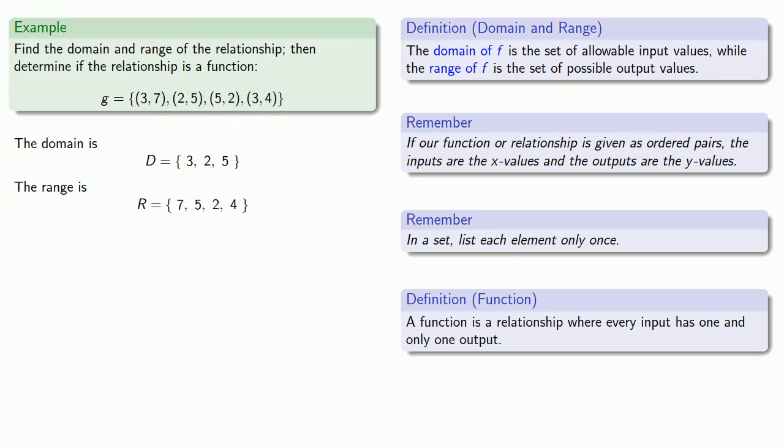And if we look at our list carefully, we see that the input 3 has two different outputs. Here, the output is 7, and here, the output is 4.